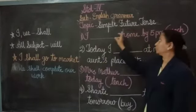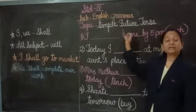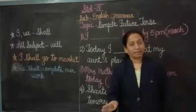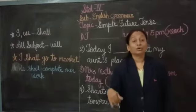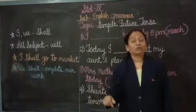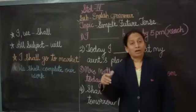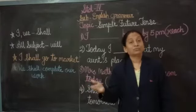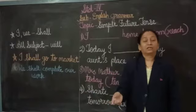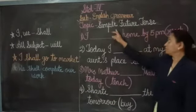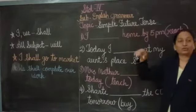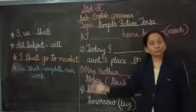But Simple Future Tense means the things have not yet happened. They are going to happen after a few hours, few days, or few months. So that is the meaning of Simple Future Tense — things which are going to happen in the future.